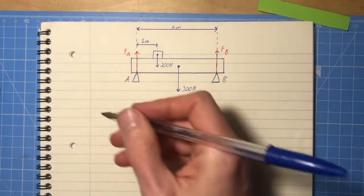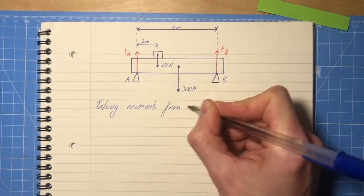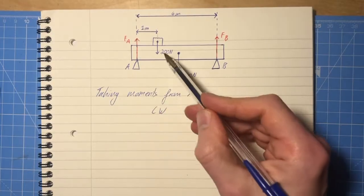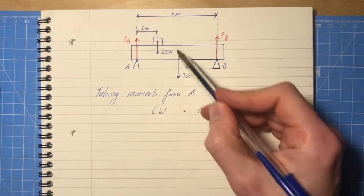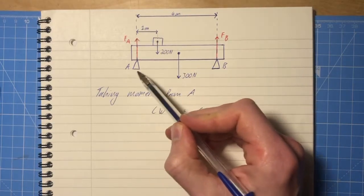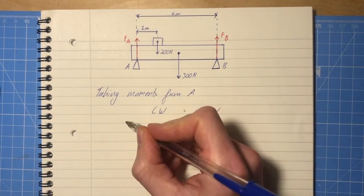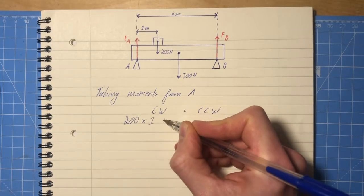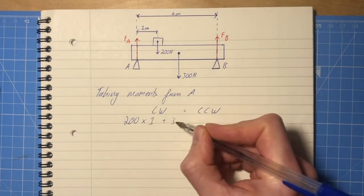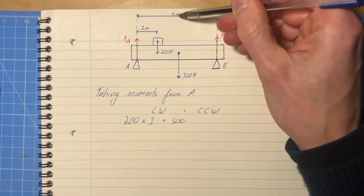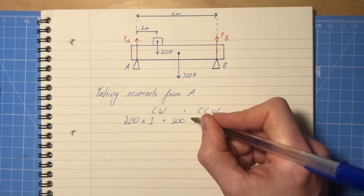So taking moments from A. So from A, what clockwise forces have we got? What clockwise moments have we got? Well, clearly the 200 is causing a clockwise movement. So we have force times distance, 200 times 1, plus 300 times, I'm going to imagine this is in the middle of the beam, so that's times 2.